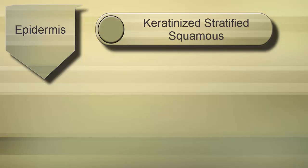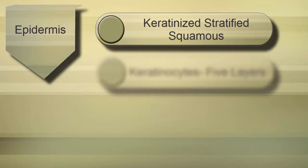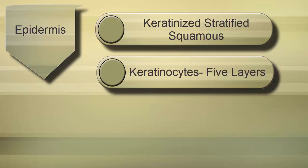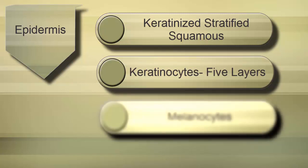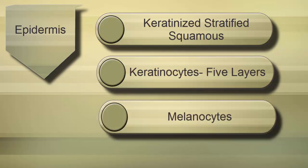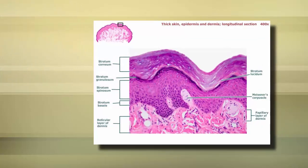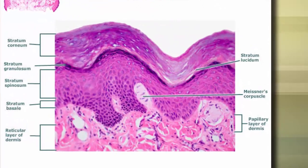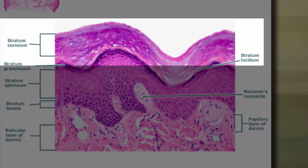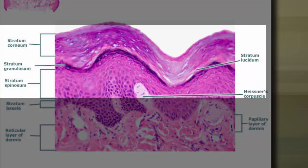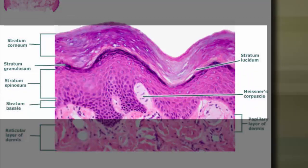Looking at the epidermis, the things you need to know are that it is a keratinized stratified squamous epithelium, that the cells are called keratinocytes and there are five layers of them, and there is another cell called the melanocyte. Looking at the epidermis more closely we can see the five different cell layers: the stratum corneum, stratum lucidum, stratum granulosum, stratum spinosum, and the stratum basale.